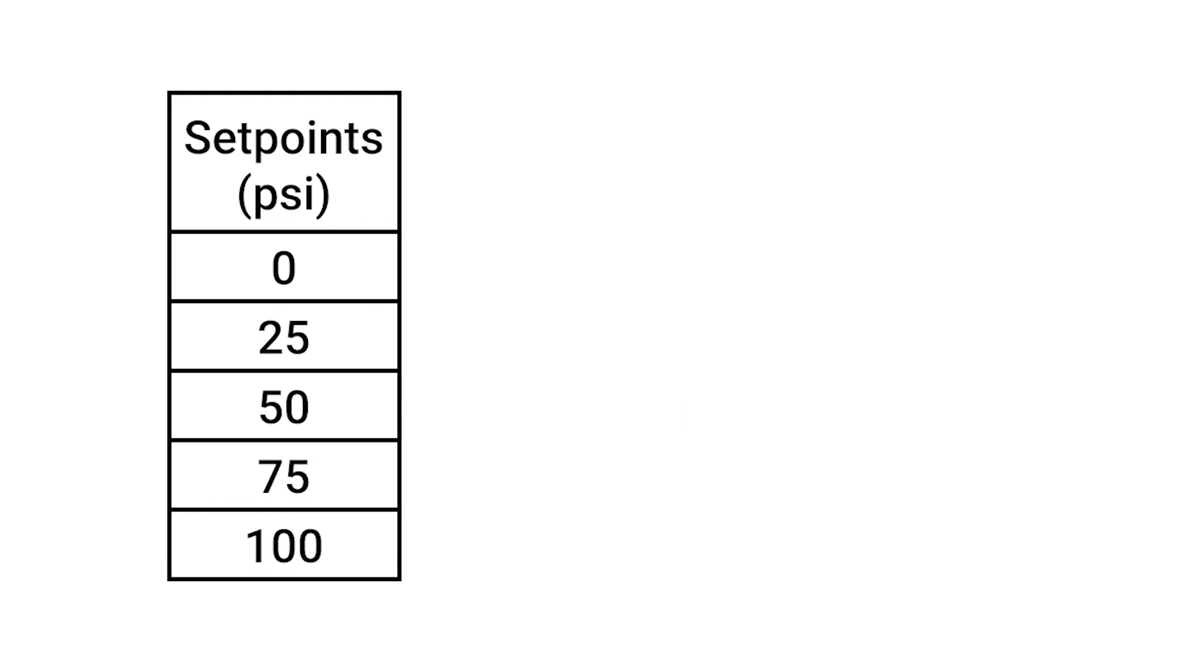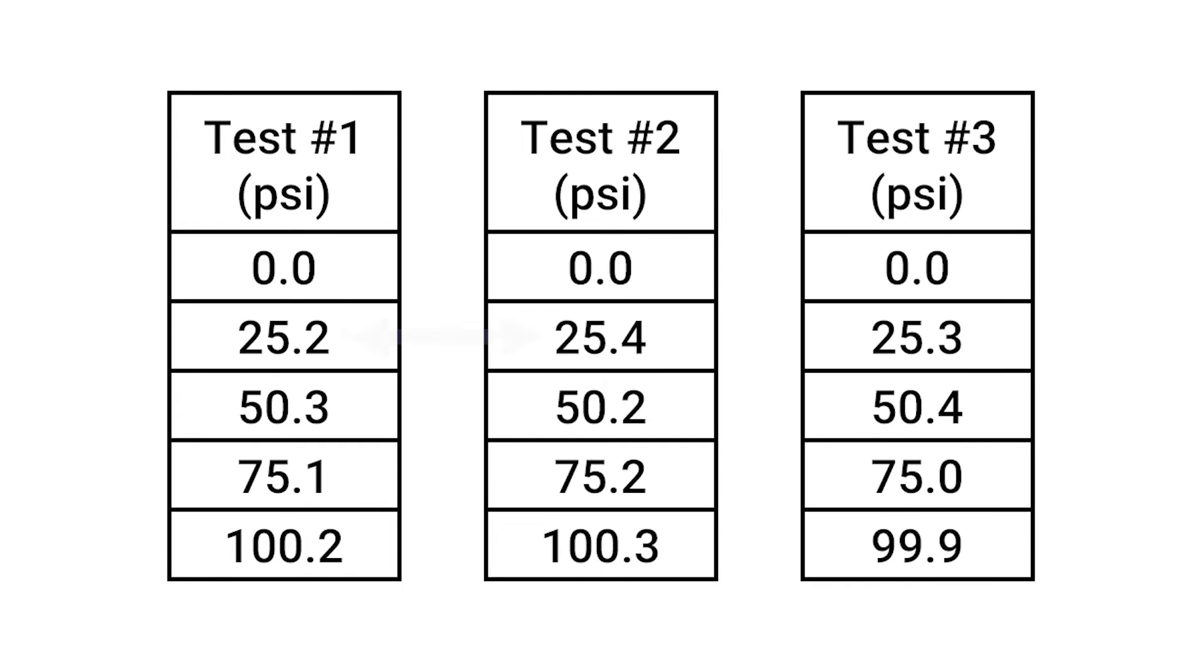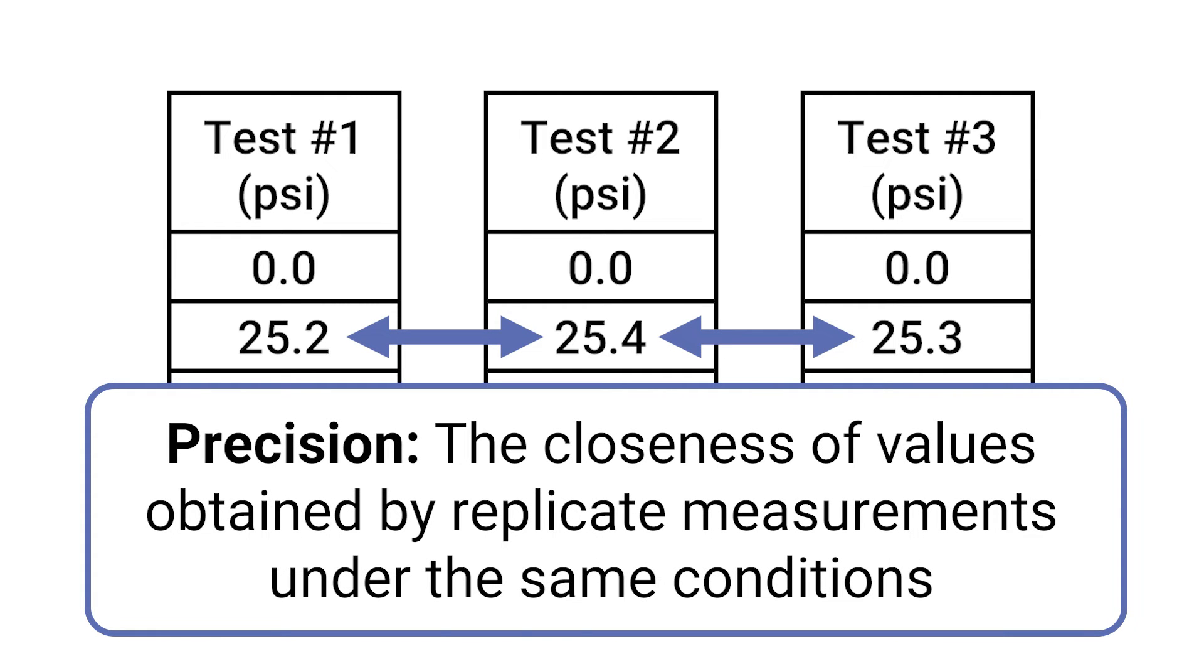If a measurement set point is taken multiple times under the same conditions, for example if this test was cycled up and down multiple times, the difference between recordings from the same set points is referred to as the precision of a measurement.